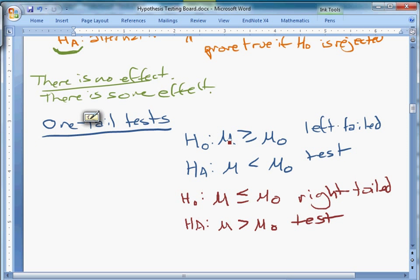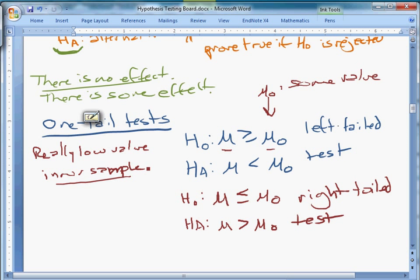Well, what this is essentially saying is that the true population mean, under the null, we're assuming that the true population mean is greater than or equal to some value. Mu zero is always some value. And so we're assuming that the true population mean is greater than some value. Now, if it turns out that we get a really low value, so we get a really low value in our sample, then we'll know that that can't be true. If you think back to confidence intervals, what we're essentially saying here is related to that. If we get a really low value in our sample, there's no way that the population mean is large, because our sample mean is really small. So if we get a really low value of X bar, for example, then there's no way the mean is really high.